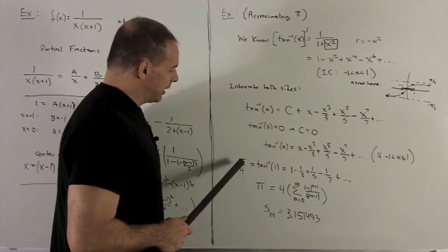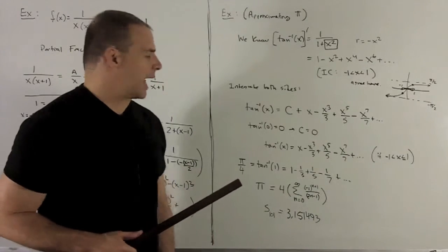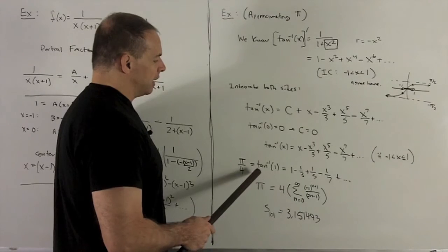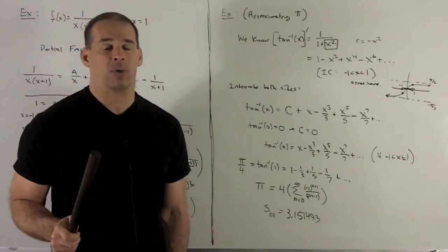Now, I'm going to take tan inverse of one, which I just argued is perfectly fine to look at. Okay, well, what angle is going to give you one as the tangent? Well, that's going to be where sine equals cosine, so that's going to be pi over four.